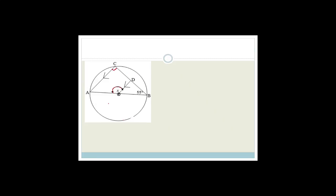There are a couple of ways to get there, and there really isn't a right or wrong way — it doesn't matter if it takes you three steps or twenty steps, as long as your mathematical reasoning is correct. I personally see that angle ACB equals 90 degrees, because it's the angle in a semicircle. If that's the case, do you agree that this angle here is also 90 degrees, because they're corresponding? AC is parallel to OD, so angle ODB is also 90 degrees — corresponding angles, because AC is parallel to OD.